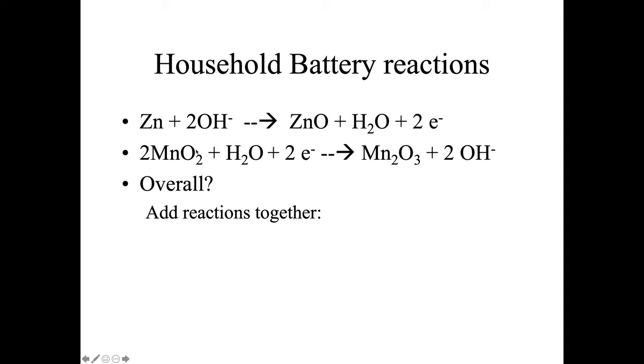Now to do the overall, what we're going to do is add the reactions together, and then we're just going to clean it up. So on this slide, I'm going to go through it with you. To add them together, we're literally going to take the stuff on the left-hand side of both reactions and put it together, the stuff on the right-hand side of both reactions, and put it together. So you can see it looks like this. Zinc and two hydroxides, two MnO2s, water, and two electrons.